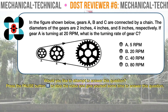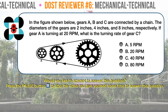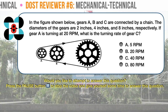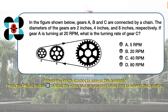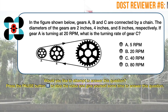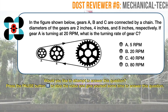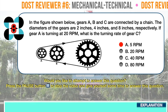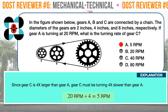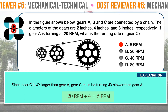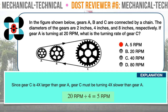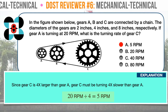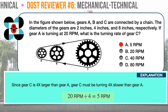Question number eight. In the figures shown below, gears A, B, and C are connected by a chain. The diameters of the gears are 2 inches, 4 inches, and 8 inches respectively. If gear A is turning at 20 revolutions per minute, what is the turning rate of gear C? The correct answer is A: 5 rpm. The diameter of gear C is 4 times the diameter of gear A. Since the gears are all connected by a chain, the tip velocity of all the gears must be the same, otherwise the chain would come off the gears. Therefore, gear C must be turning 4 times slower than gear A: 20 rpm divided by 4 equals 5 rpm.